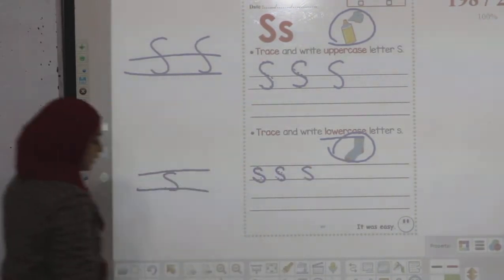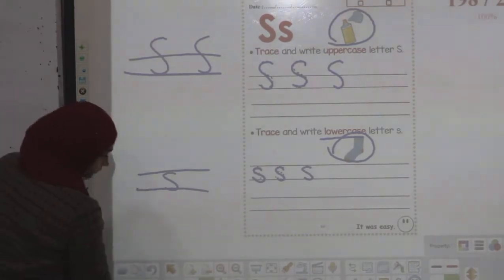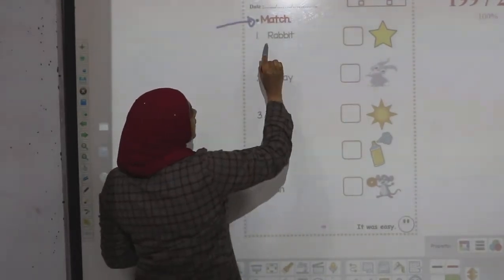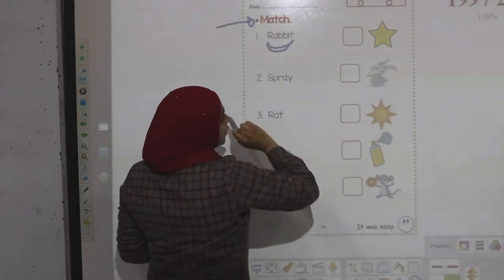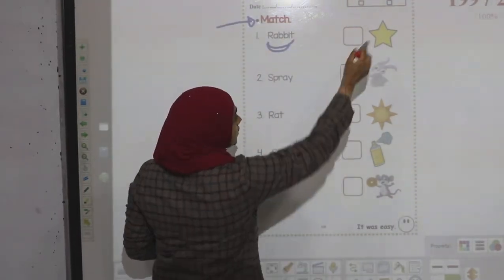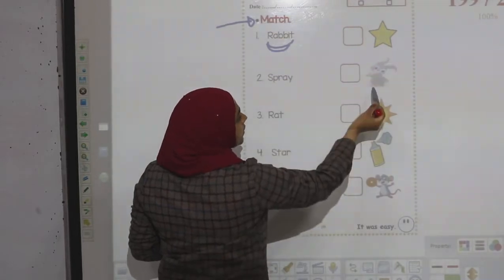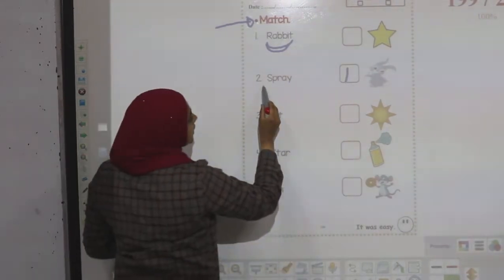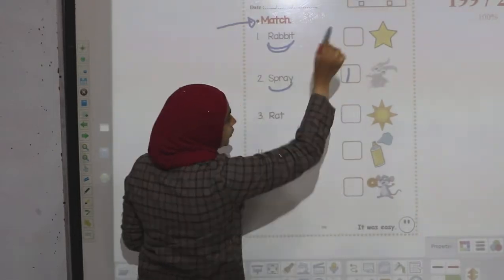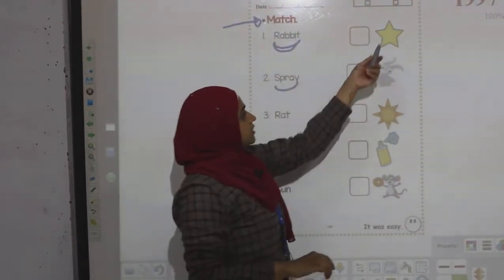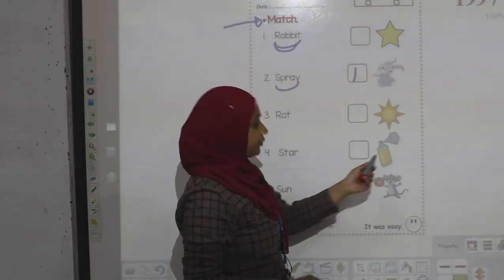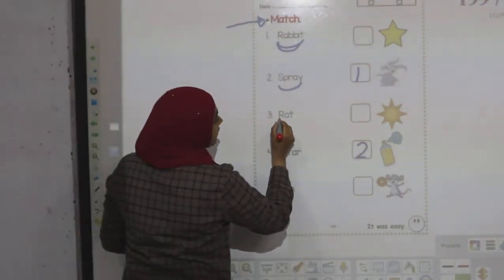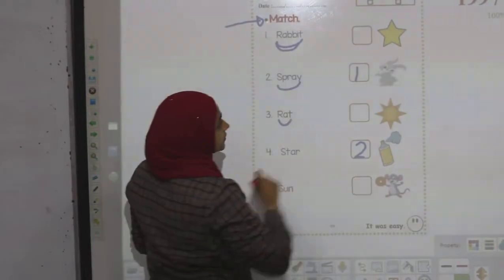Turn the page. We will match. Number one — rabbit. Which one here is rabbit? This is rabbit. Number two — spray. Which one here is spray? This is star, sun, spray — I write number two.